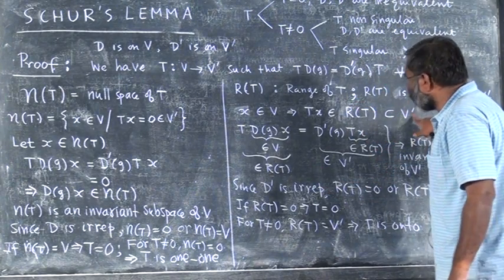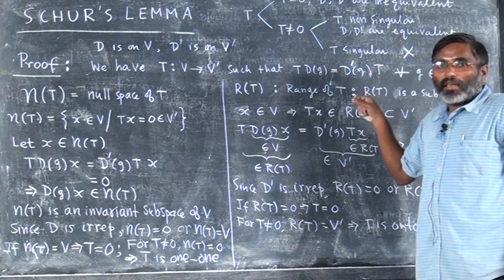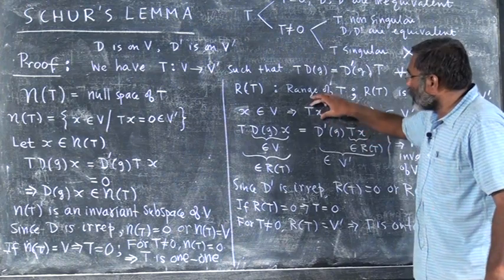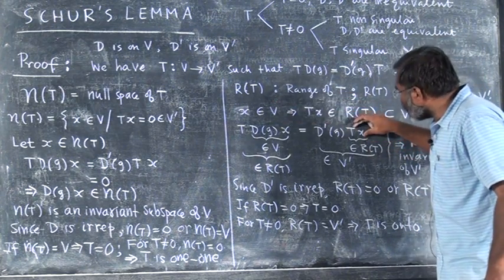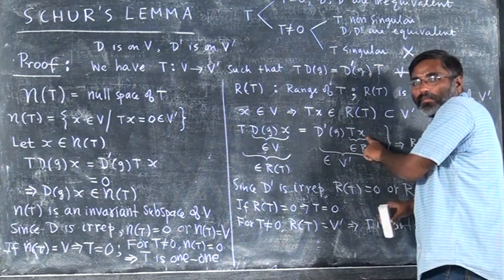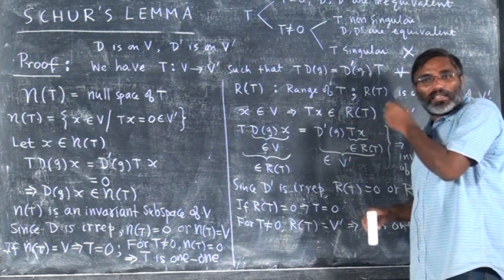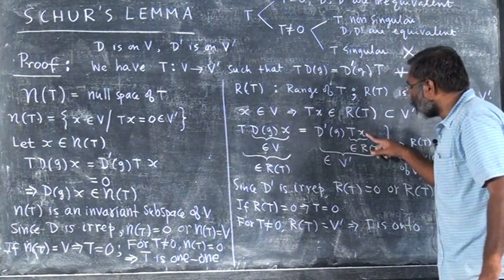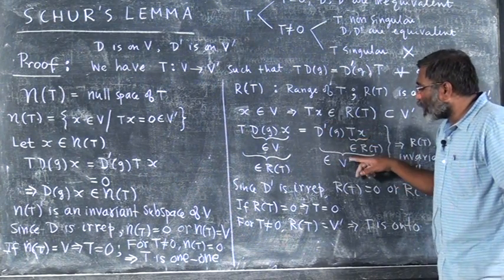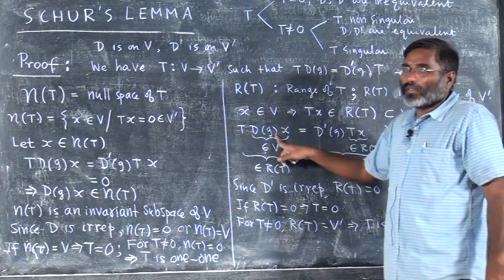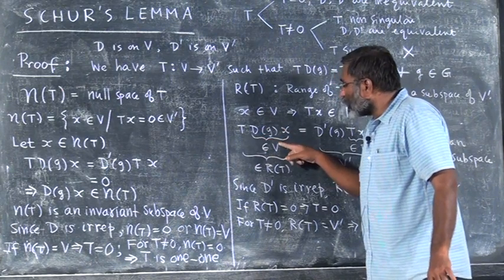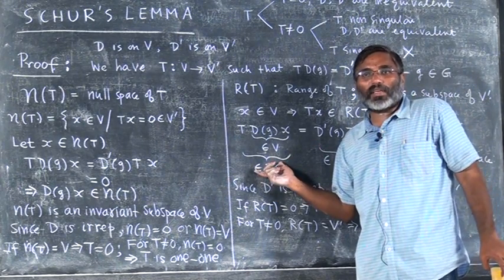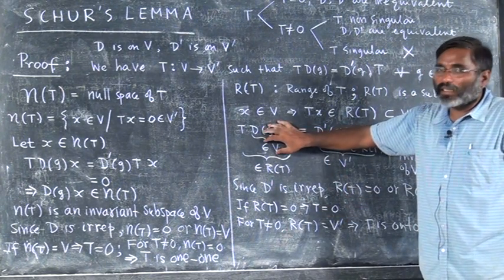Now, range of T is a subspace of V prime. So I take an element in R of T — every element in R of T will be like T into some element in V, correct? Every element in R of T will be like T of X for some X in V. So I am taking one such element and applying D prime on that, and I have to show that it will belong to R of T, then only I can say R of T is an invariant subspace. Here the showing is not so direct, because when I put D prime of G and T of X, I will get from this side an element in V prime only, but that element is equal to this. D of G of X is an element in V, and T into any element will be in R of T.